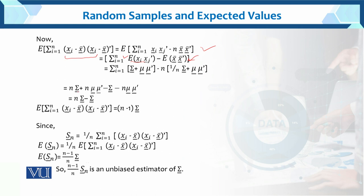Substituting and simplifying: the constant terms summed give n times sigma plus n times mu mu-transpose, minus n times (sigma over n plus mu mu-transpose). This simplifies: the n cancels in the first term giving sigma, and the second term gives n times sigma. So after simplification: n sigma minus sigma = (n minus 1) sigma. Therefore the expected value of the cross product sum equals (n minus 1) sigma.